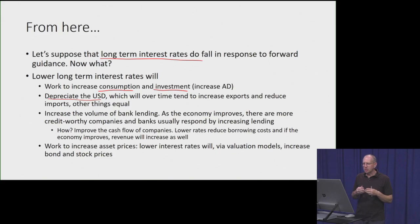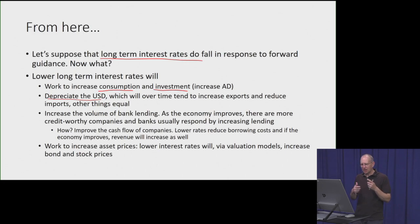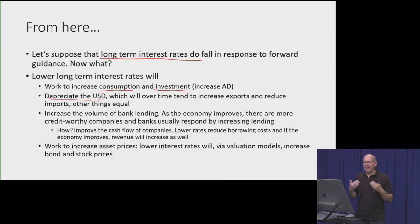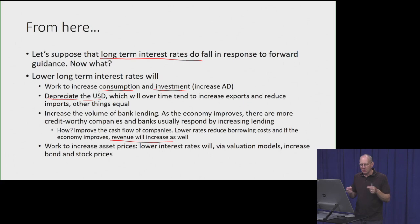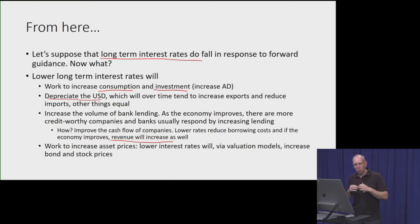Lower long-term rates will also tend to increase bank lending volume. This seems counterintuitive — why would a bank make more loans if longer-term interest rates are falling? But when an economy gets better, there are more credit-worthy companies to lend to. As the economy improves, revenue to firms increases, improving cash flow. And since most firms are net borrowers, lower long-term interest rates reduce cash flow needed for debt payments, improving free cash flow, making them better credit risks. So banks will tend to lend more.